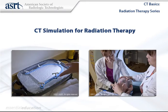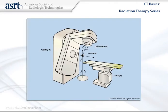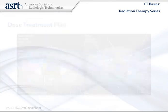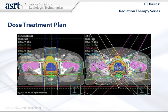The module CT Simulation for Radiation Therapy is available as an individual download for 1.5 Category A CE credits. This module specifically describes the components of the CT simulator and the role of simulation in preparing a patient for radiation therapy.